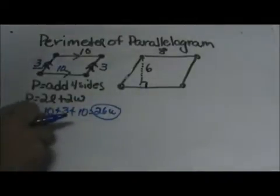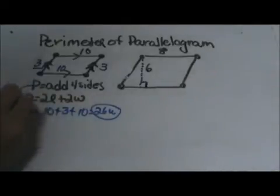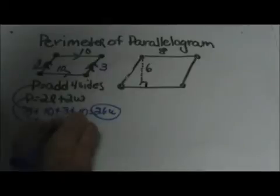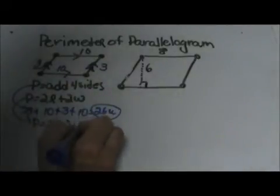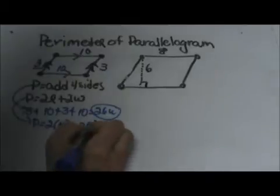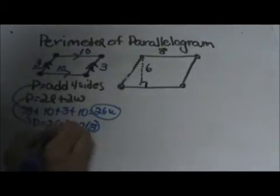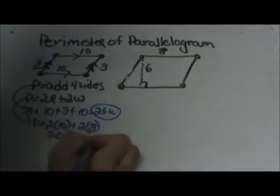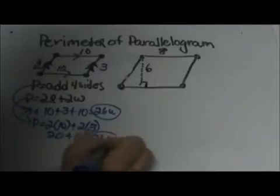Or we can use the formula, so that is adding the four sides. Or we can use the perimeter formula 2 lengths plus 2 widths. To find the perimeter I can take 2 times my length which is 10 plus 2 times my width which is 3, and 2 times 10 is 20 plus 2 times 3 is 6.